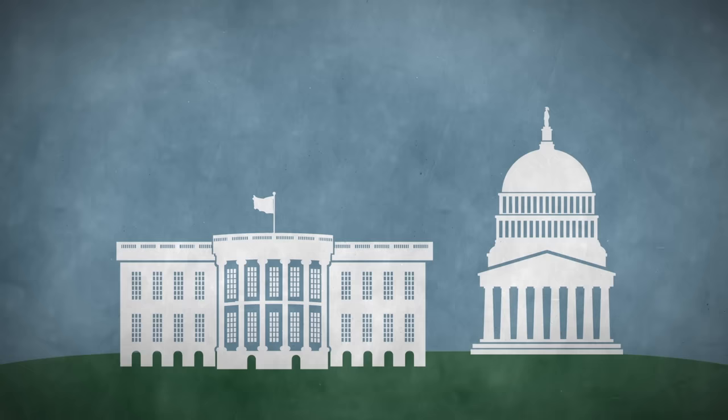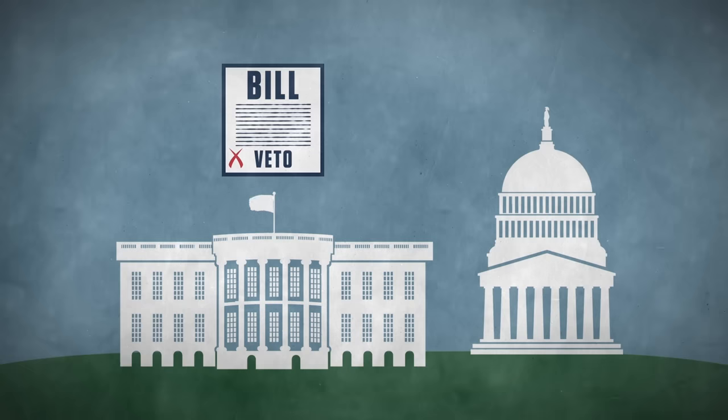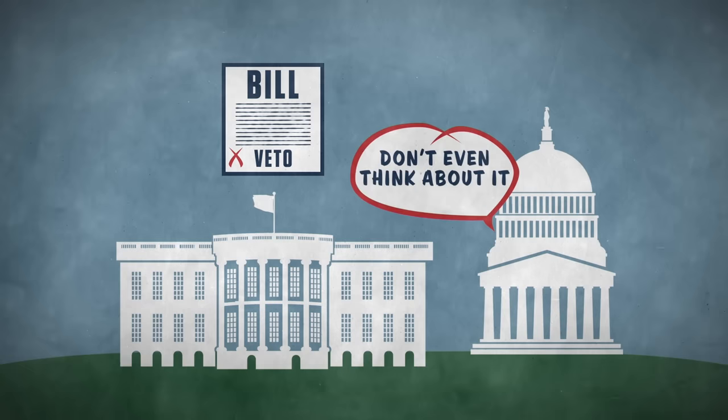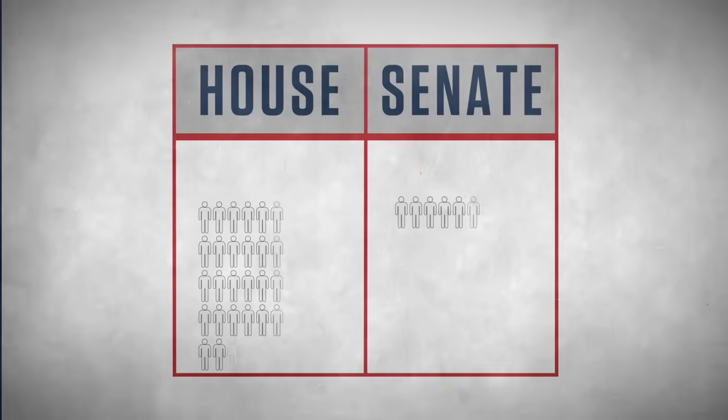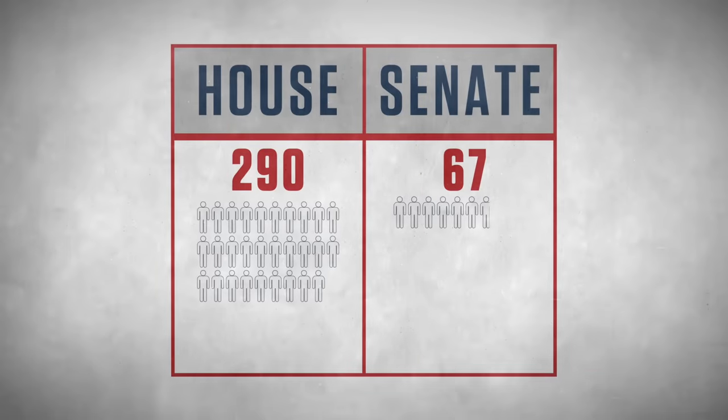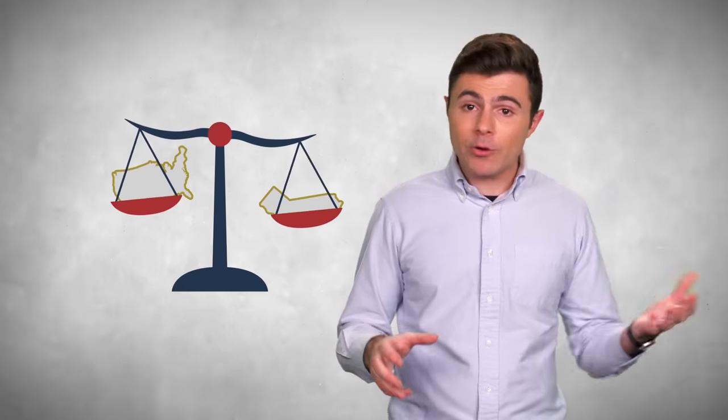If the president chooses to veto a bill, which essentially voids it, Congress can push back with a veto override. But to do this, they need a two-thirds majority vote in both houses. Failing to pass legislation is an inevitable part of congressional routine. Congress is the only branch of government whose members are elected directly by the people, and the only part of government that tries to balance the relationship between the power of the nation and the individual states.